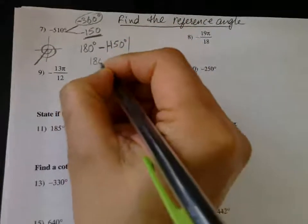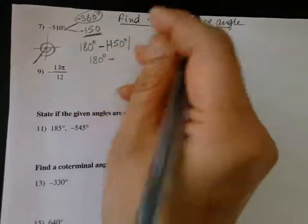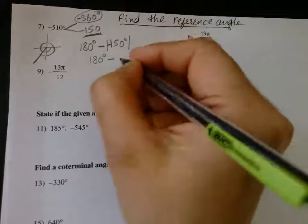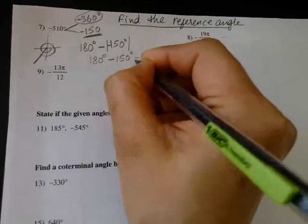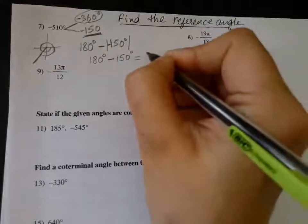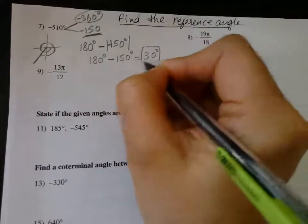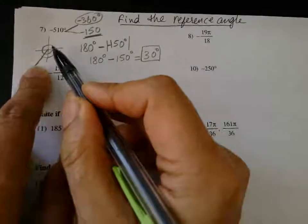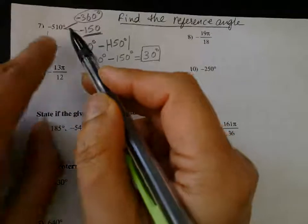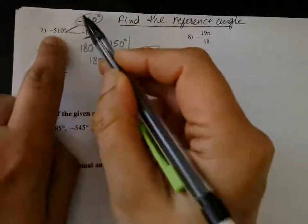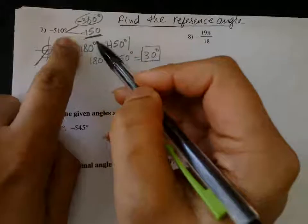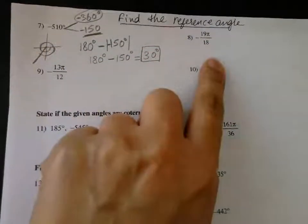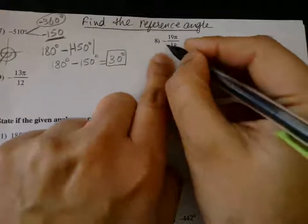Taking the absolute value, negative 150° becomes 150°. So we get 180° minus 150° which equals 30°. That is your reference angle. You can graph it for visual understanding, or just make a combination of 360° and the remaining angle to find the total. Let's do the same for negative 19π/18.